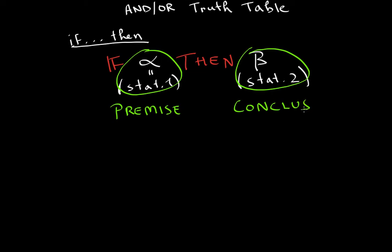Normally in proofs, we are given the premise and we can assume the premise, and our goal is normally to prove the conclusion. Now, one thing that you want to notice is that the if-then statements have a direction.